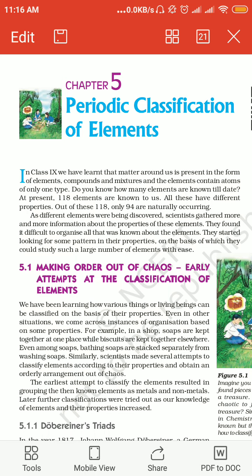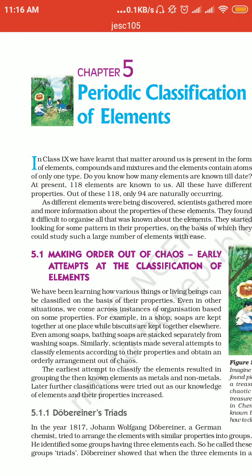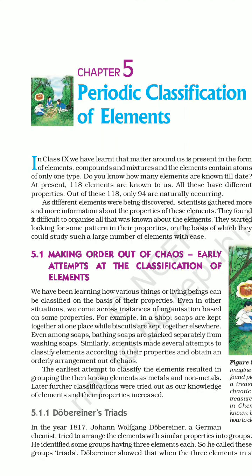So till now, 118 elements are known to us. अभी तक 118 elements हमें पता हैं। Out of these 118 elements, 94 elements are naturally occurring. Now as different elements were being discovered, scientists gathered more and more information about their properties.